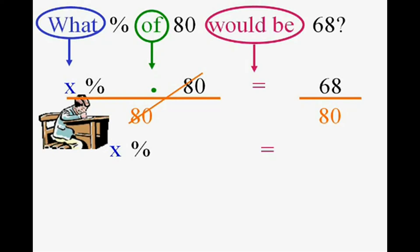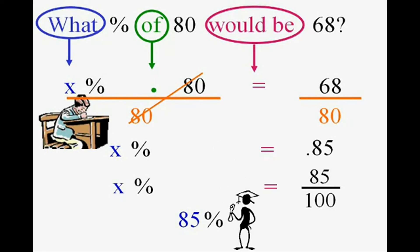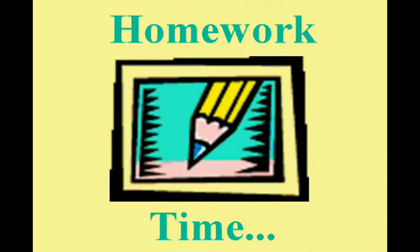Now, sixty-eight over eighty — we're just going to change it to a decimal by dividing top by bottom, and you'll get 0.85. Read to the hundredths, we should say eighty-five one-hundredths. And what percent is eighty-five one-hundredths? Eighty-five percent. You're going to have to practice this, so get to that homework.